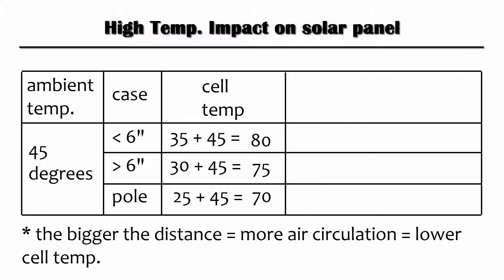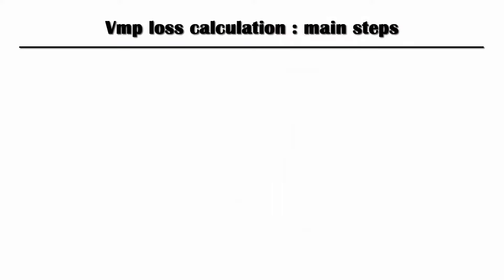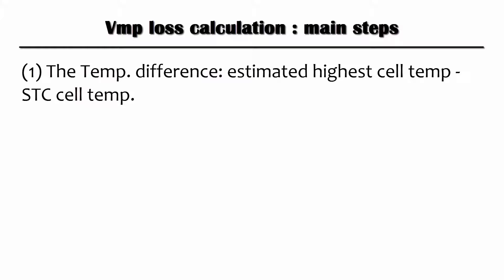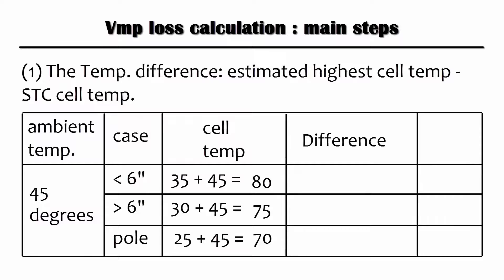The bigger the distance, the cooler the cell temperature due to air circulation. The first step to calculate the maximum power voltage loss due to high temperature is to find the difference between the STC cell temperature and the actual cell temperature. Based on our example, the difference is 55 degrees, 50 degrees, and 45 degrees.